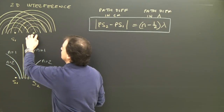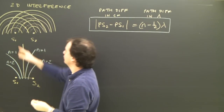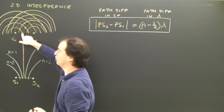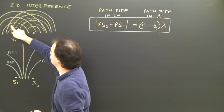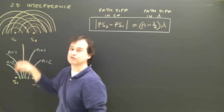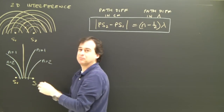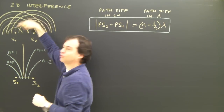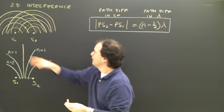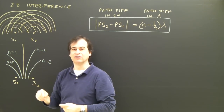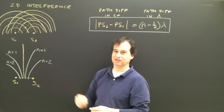I have two sources making circular waves. The yellow lines here are the crests created from the pattern, and the light orange lines are the troughs. I can go through this pattern and put little dots wherever a crest is meeting a crest — that would be a super crest — and wherever a trough is meeting a trough, that would be a super trough. The water will be very turbulent in those places.